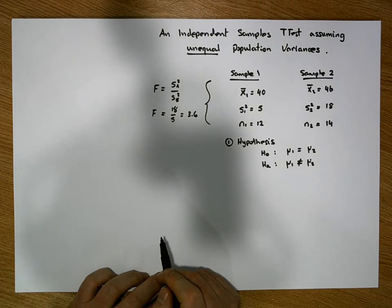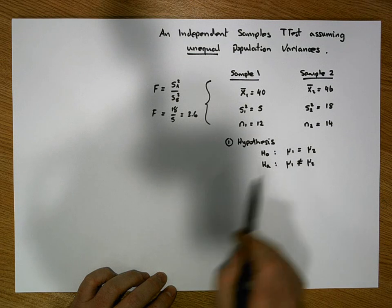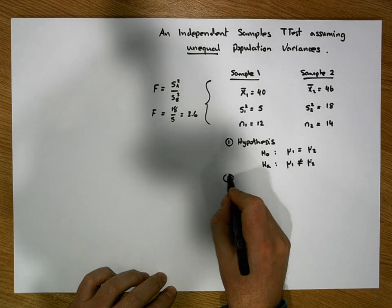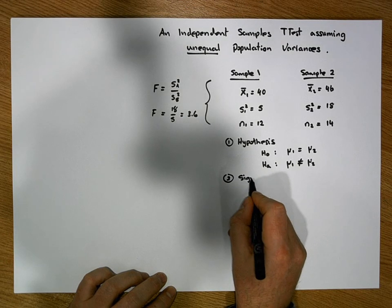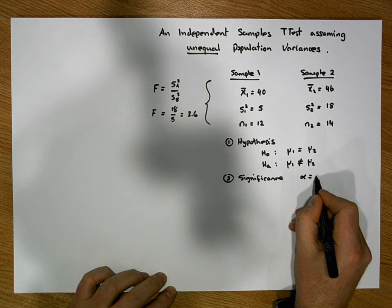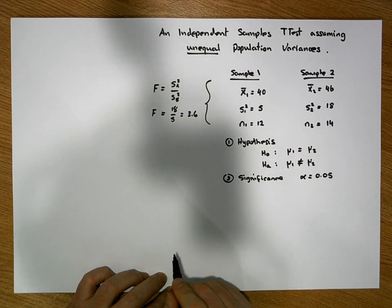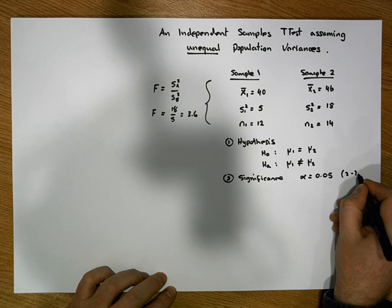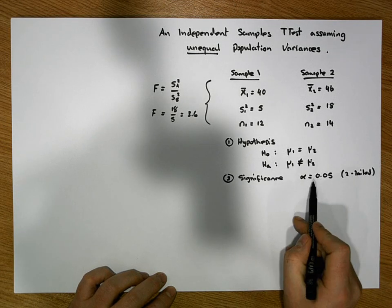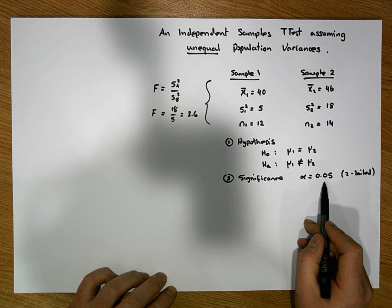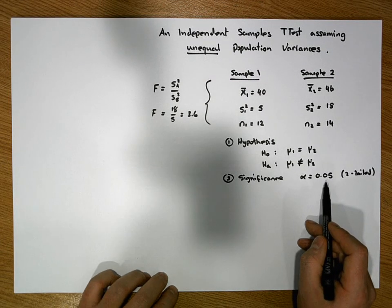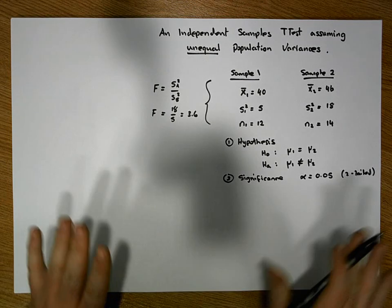Once we've defined the hypothesis, the second step is to define the significance level. We choose alpha equal to 0.05. Since this is a two-tailed test, we split alpha across both tails, giving 0.025 in the right tail and 0.025 in the left tail.